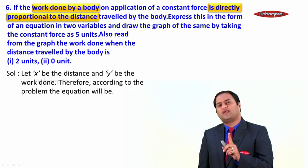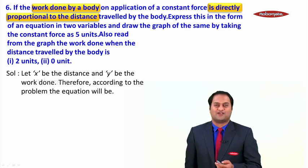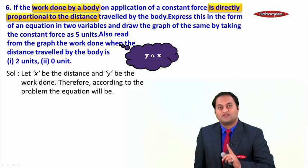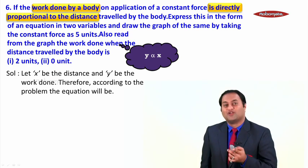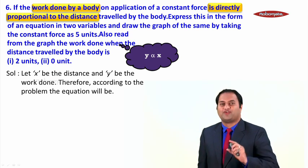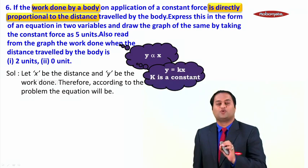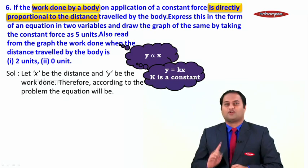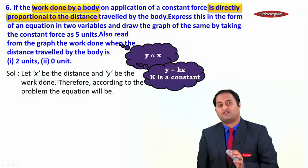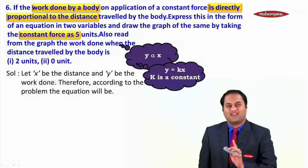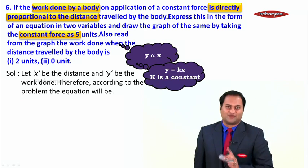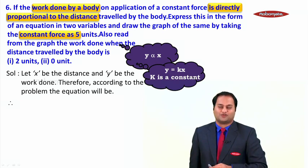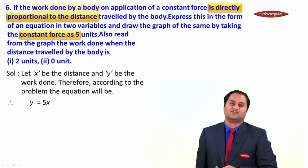Work done, that is y, is directly proportional to the distance, that is x. So the relation we get is: y is directly proportional to x. To convert this into an equation, we need to introduce a constant of variation. So we write y = kx, where k is the constant of variation. The constant force is given as 5 units, so k = 5. Therefore, the equation is y = 5x.